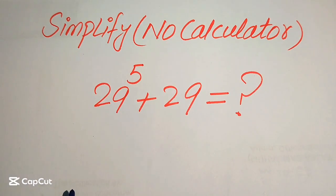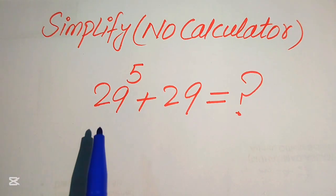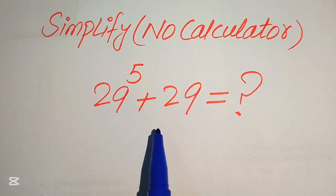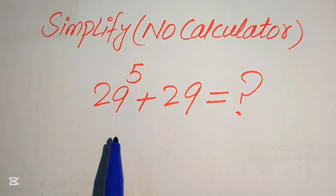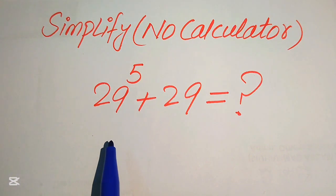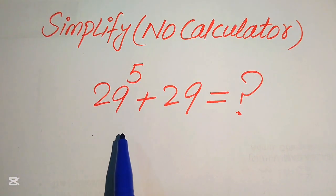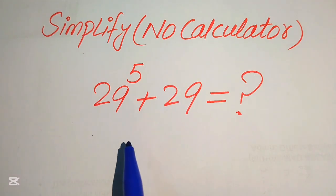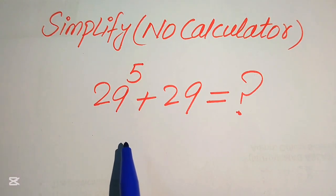Hello everyone. How to simplify this nice algebraic expression — if we have 29 to the power of 5 plus 29, we need to write this algebraic expression into simplified form. Remember, a calculator is not allowed in this problem, which means we need to show all of the working on paper.